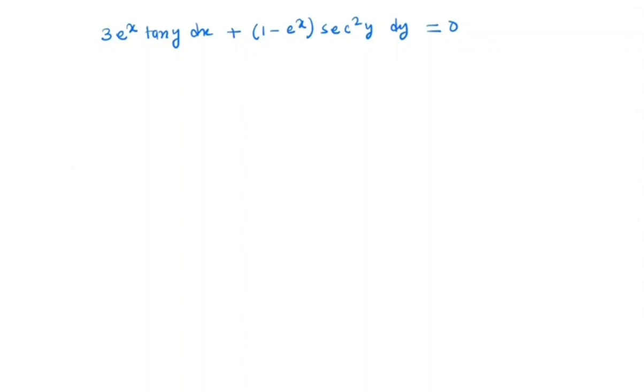So first, try to write this equation in a simplified way. We have 3e^x tan y dx is equal to -(1 - e^x) sec^2 y dy.